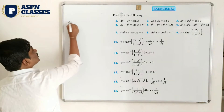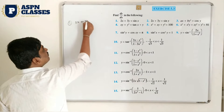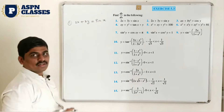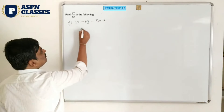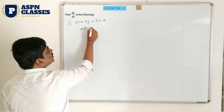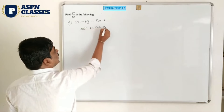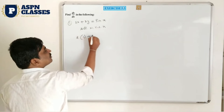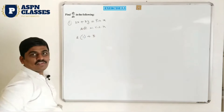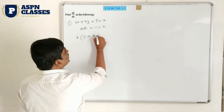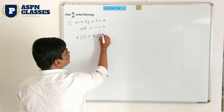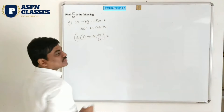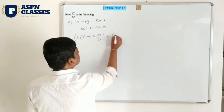Observe your first question: 2x plus 3y equals sin x. Start the differentiation — differentiate with respect to x. 2 as it is, x differentiation is 1, plus 3 as it is, differentiation of y is dy/dx. In the right hand side, sin x differentiation is cos x.